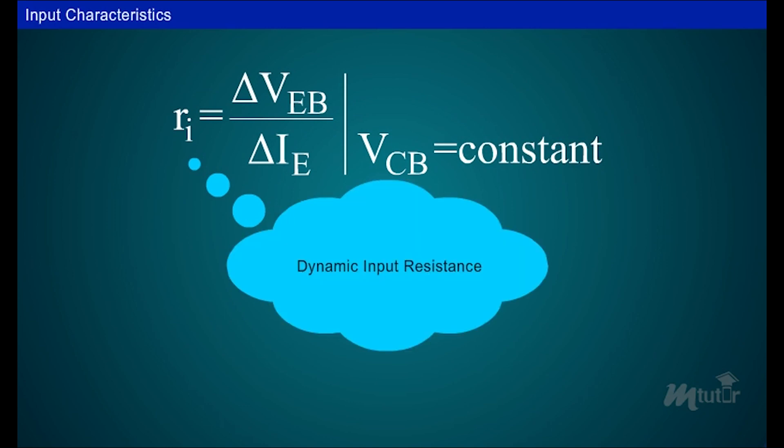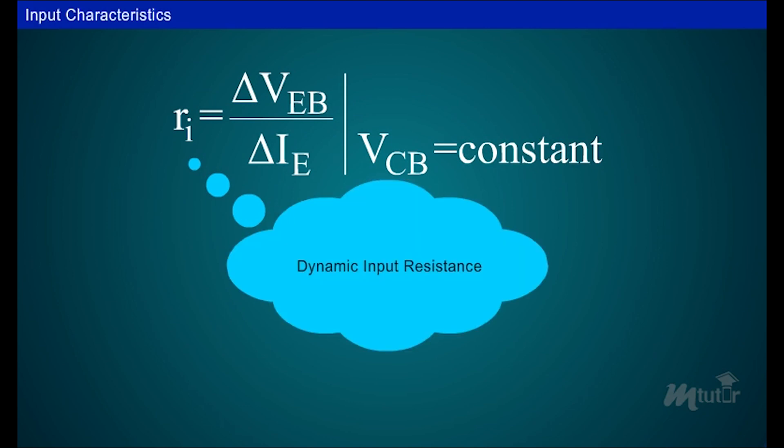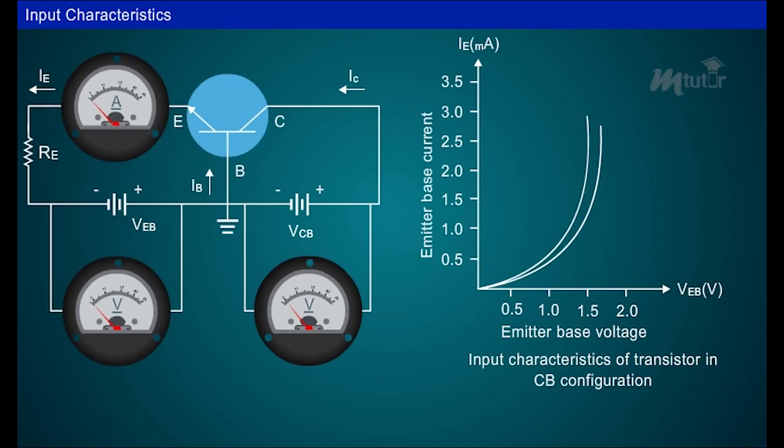This resistance is also known as the dynamic input resistance of the transistor in CB configuration. When we increase collector base voltage to 10V with constant emitter base voltage, the emitter base current increases slightly. For VCB equal to 5V, when VEB is 1.5V, then IE is 1.2mA. When VCB equal to 10V, when VEB is 1.5V, here in this stage, IE is 2mA.